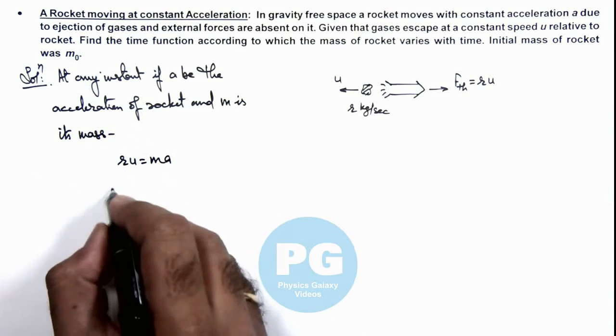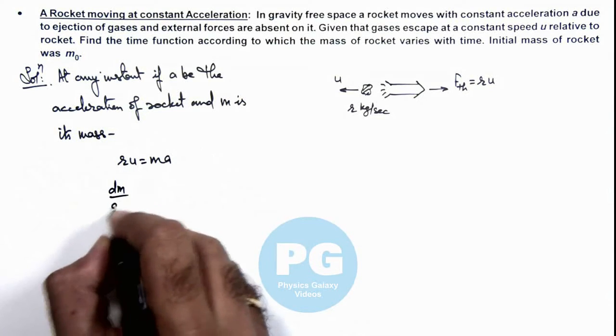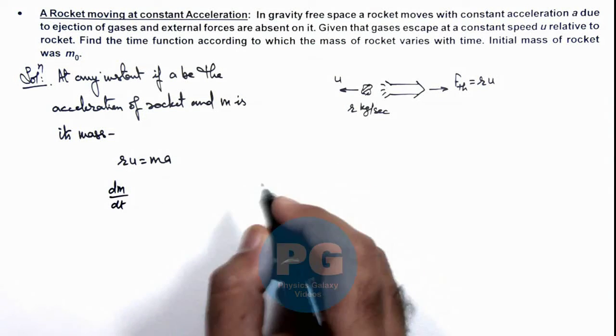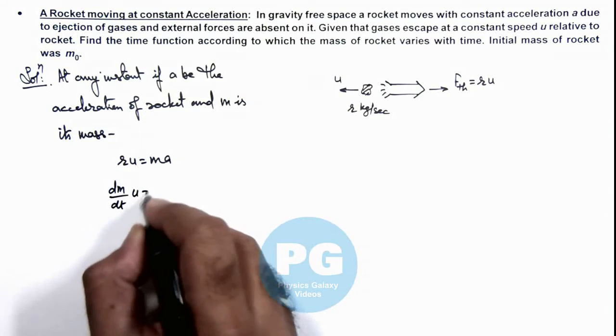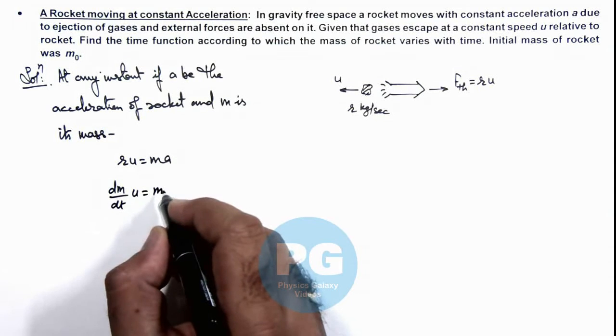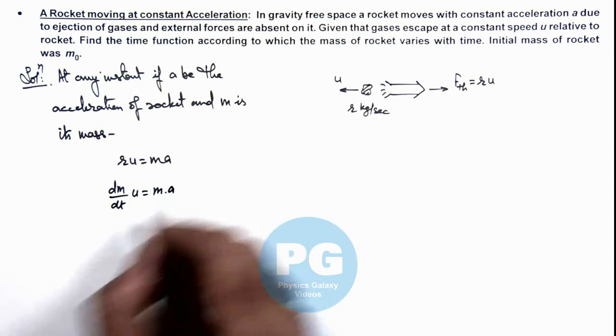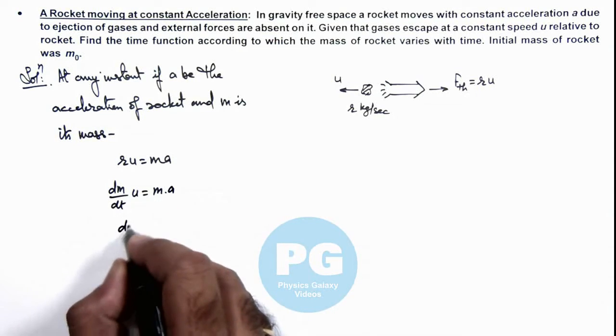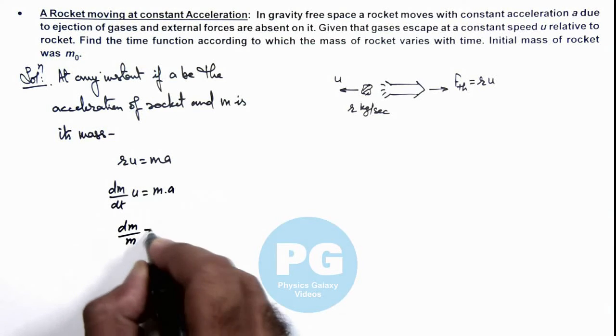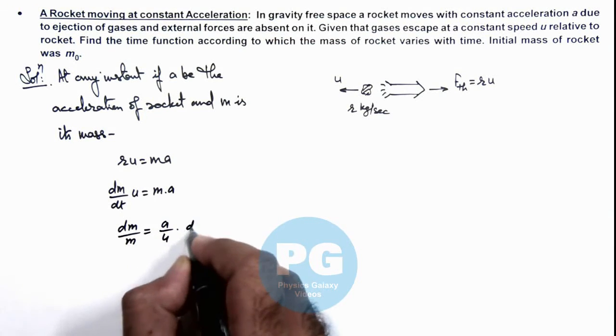Here we can write r as dm/dt, the rate at which gases are being ejected multiplied by u, equals m×aᵧ. So dm/m equals (aᵧ/u)×dt.